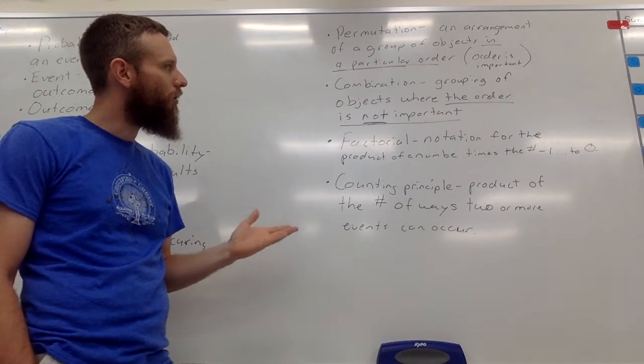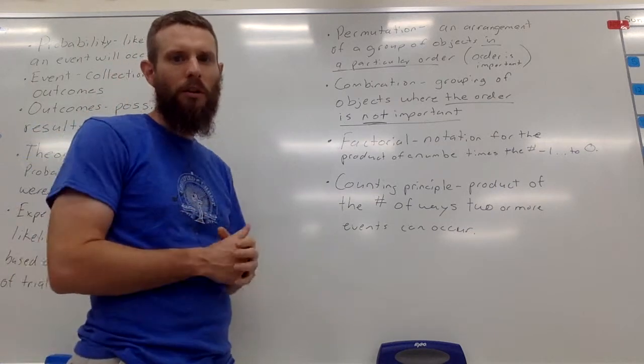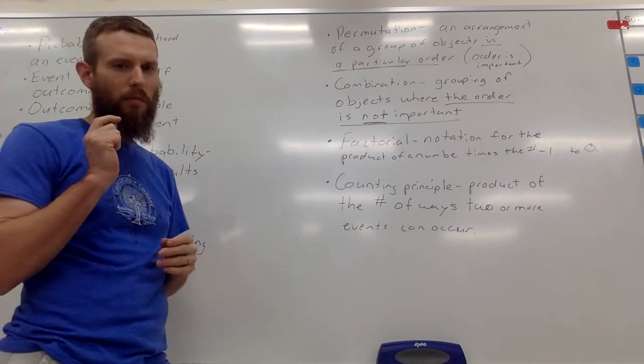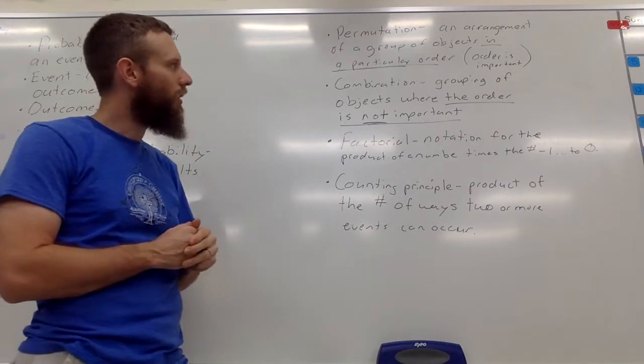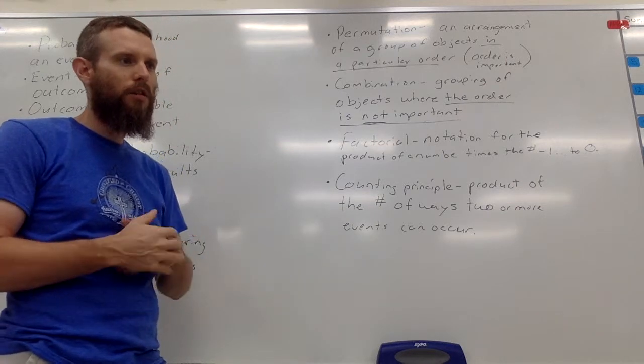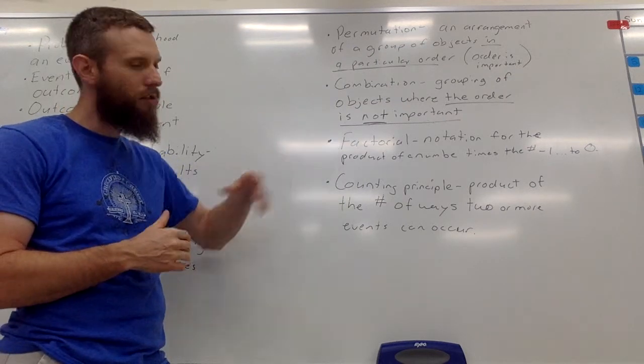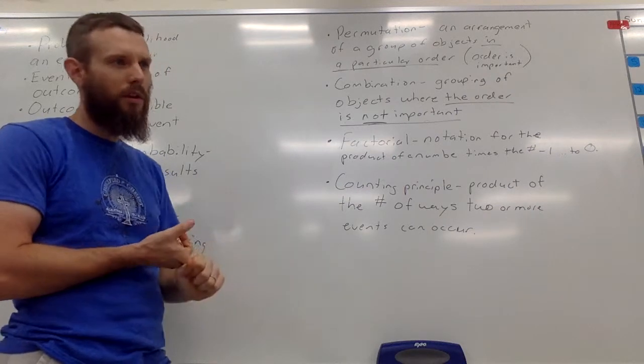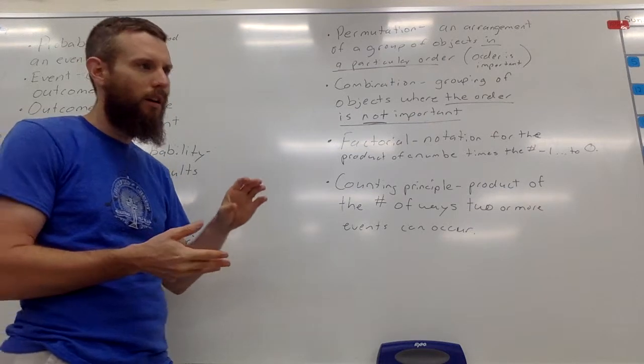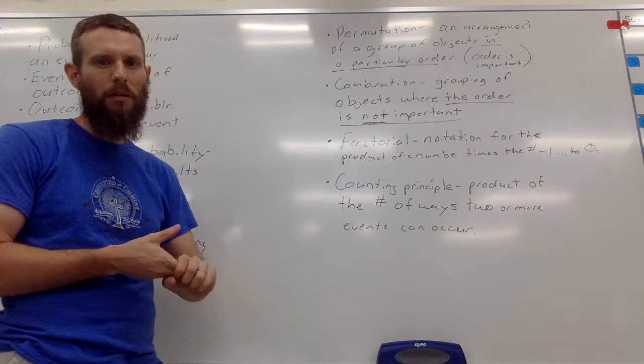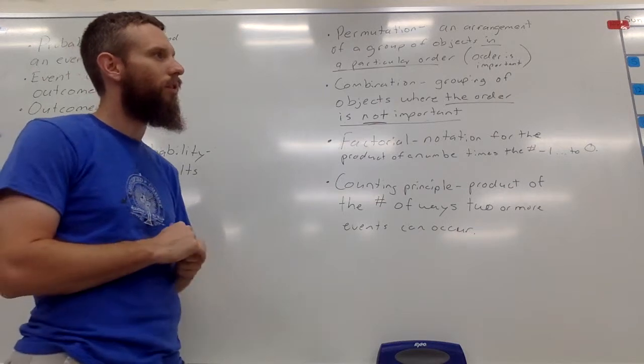A combination is a grouping of objects where the order is not important. So using the same example, if I were to say, what would be the probability, or I want to calculate the probability that if I put shuffle on my iPod, on that CD, and it shuffled the songs, what would be the probability that the first three songs that are played are my top three songs? In other words, if the order doesn't matter, I still want those three songs to play, but if my third favorite song is first, and my second favorite song is second, and then my favorite song is third, it doesn't matter because I'm still hearing those three songs instead of the other 12 that I don't like as much.